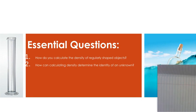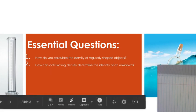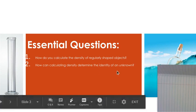and how can calculating density determine the identity of an unknown? So, how do you calculate the density of regular shaped objects, and how can calculating density determine the identity of an object?